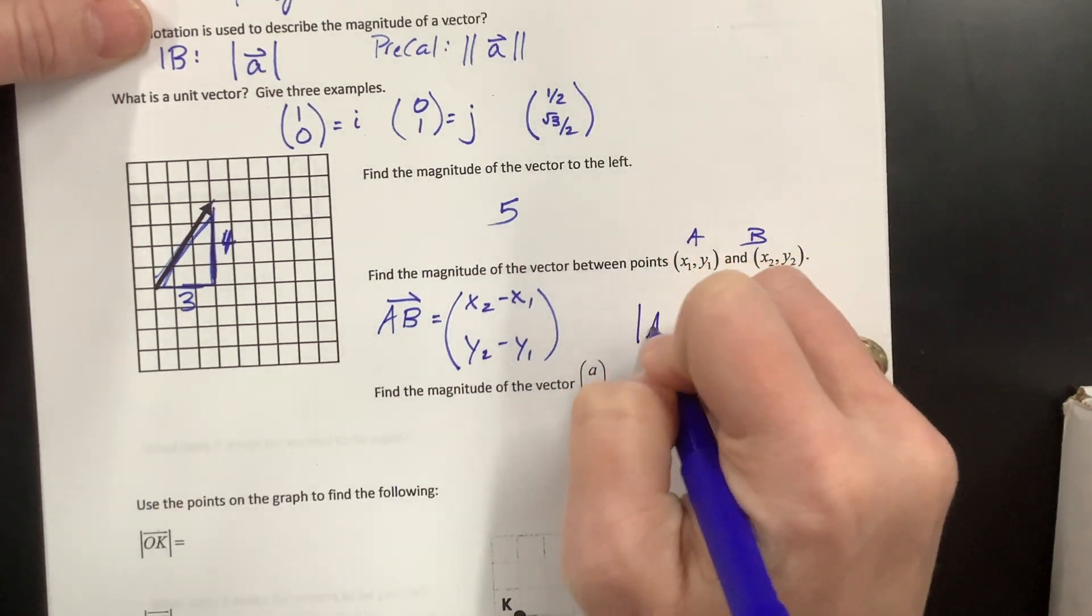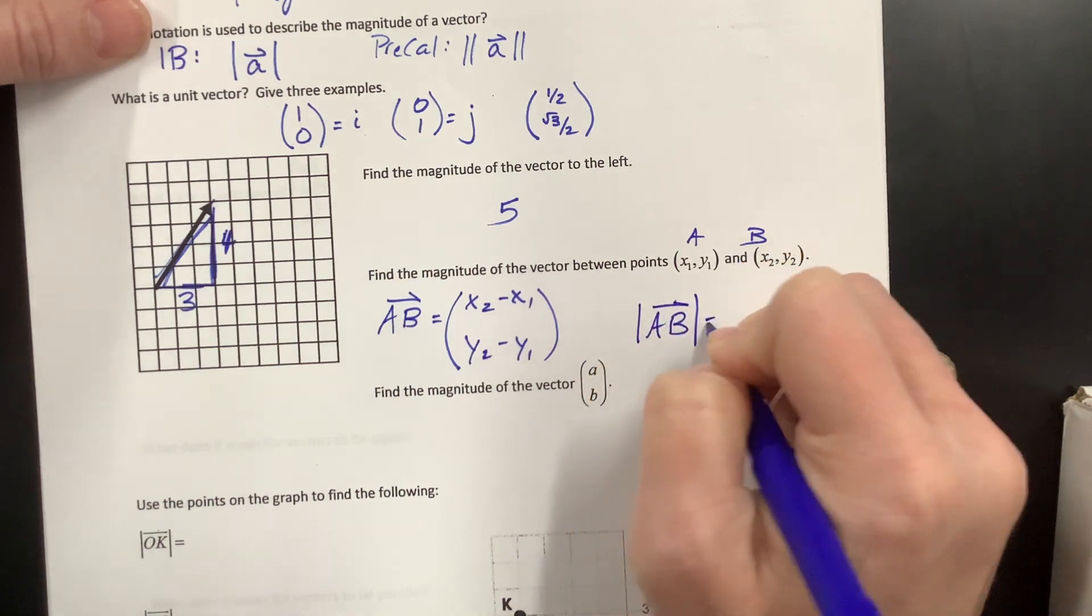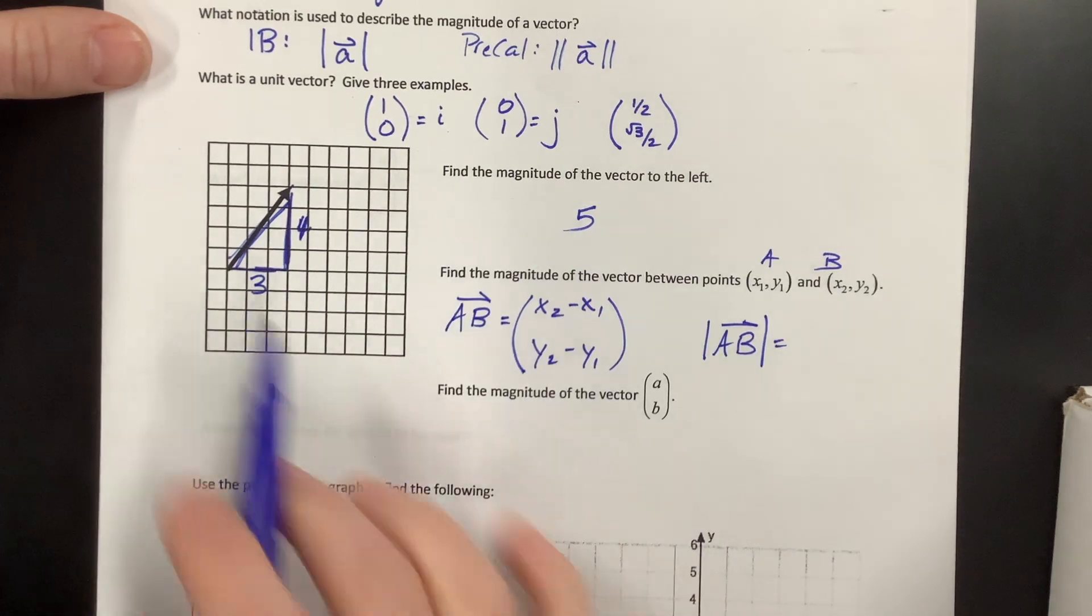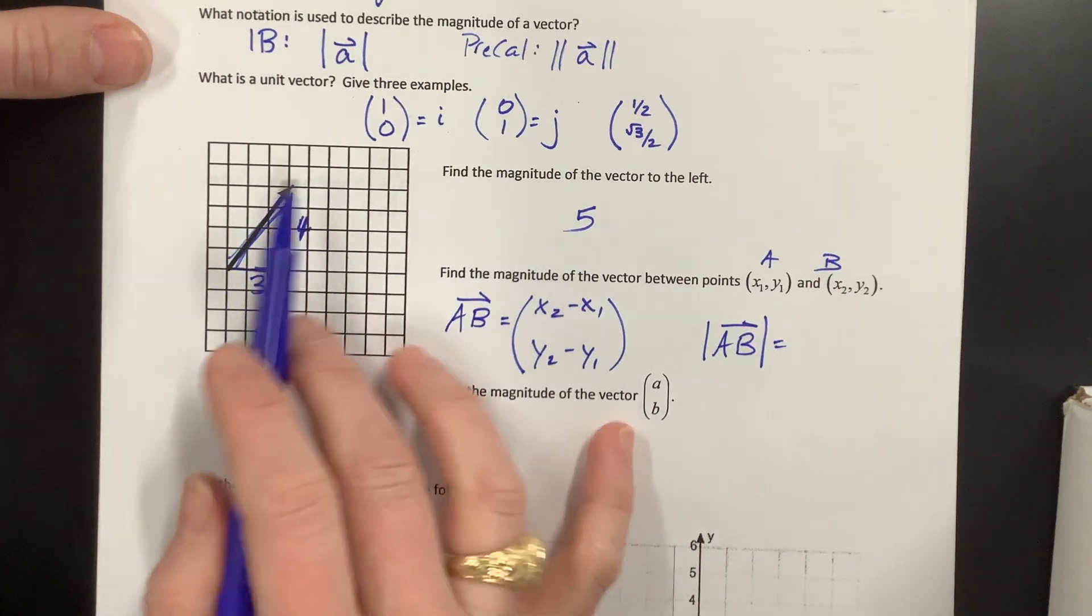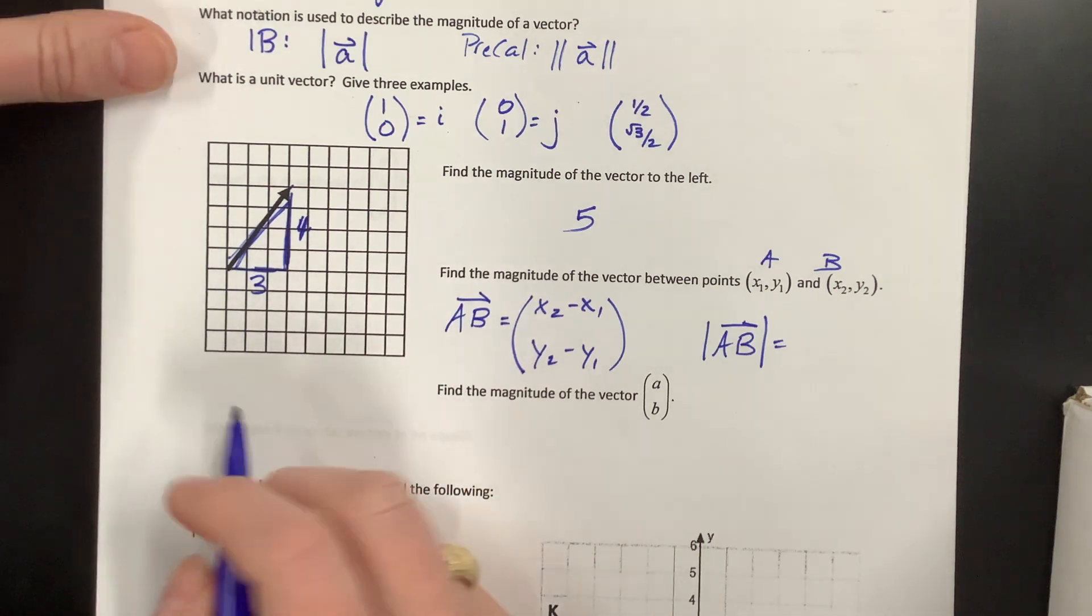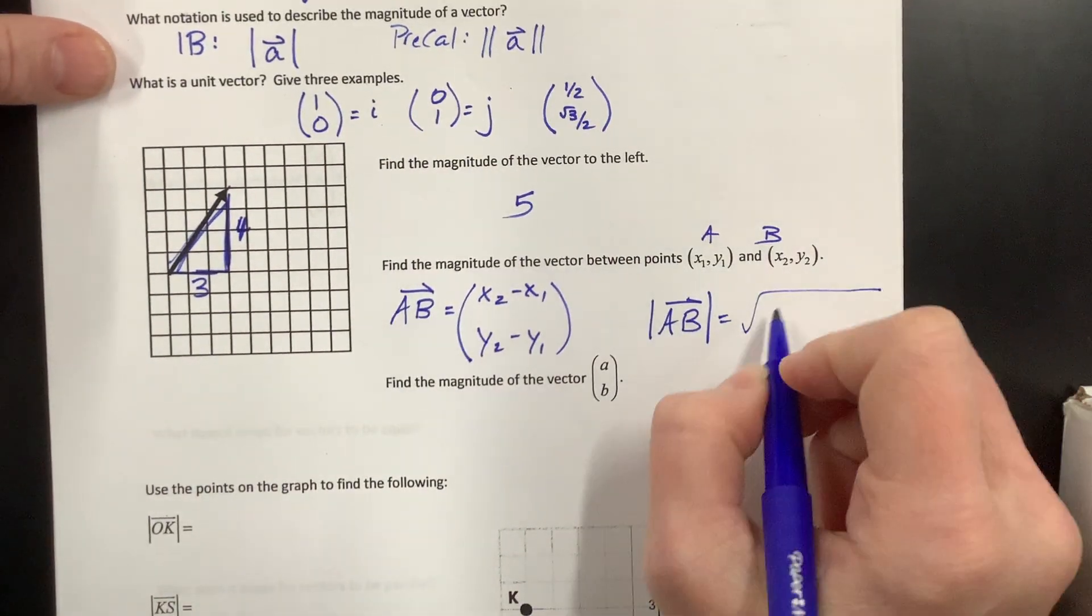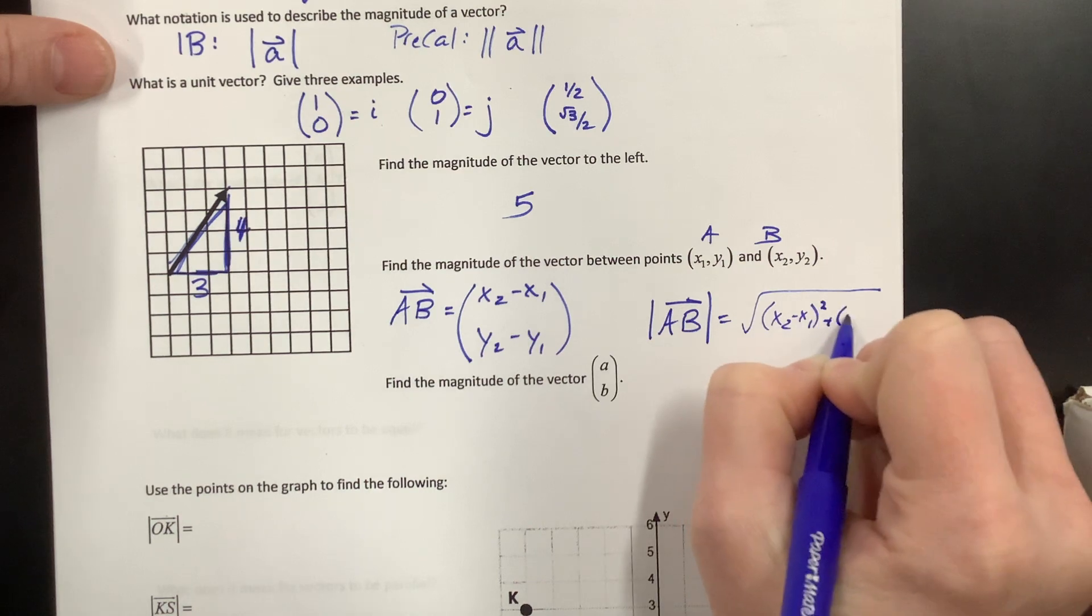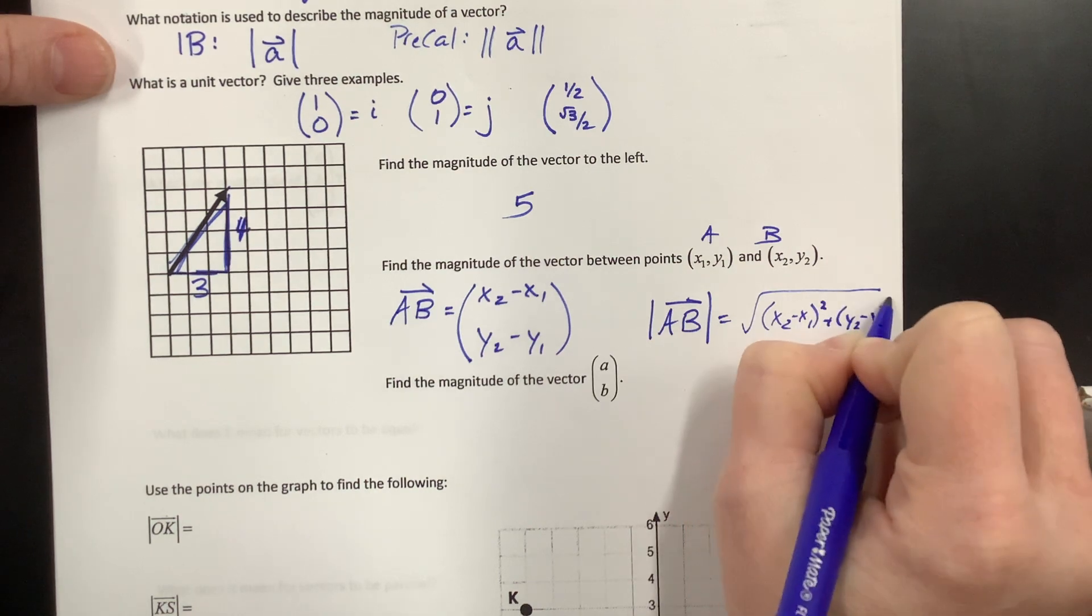And so its magnitude, the magnitude of AB would be equal to, well, this thing, so think, it's Pythagorean theorem is what's happening here. We take this value squared, this value squared, add them together, take their square root, and that'll give you the third side. So it's equal to the square root of X2 minus X1 squared plus Y2 minus Y1 squared.